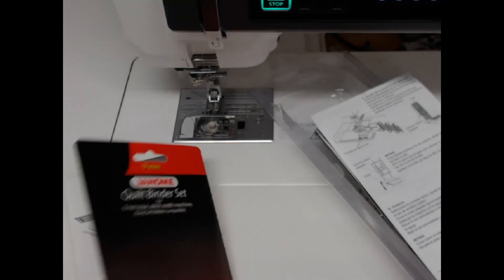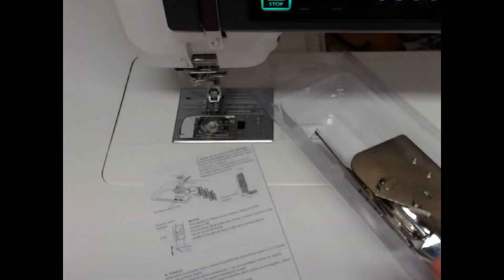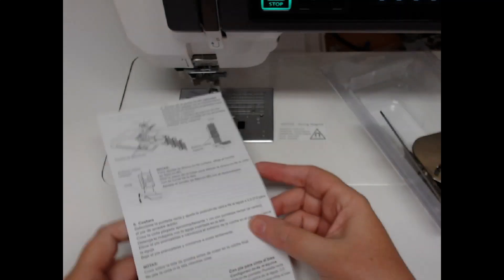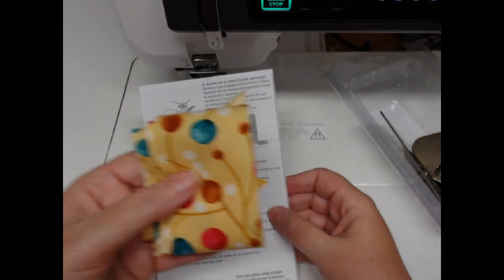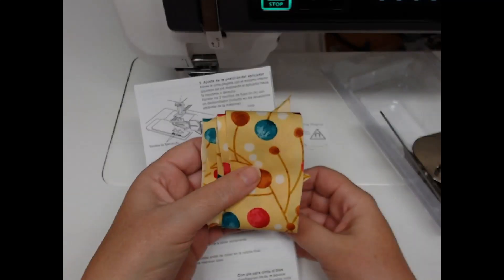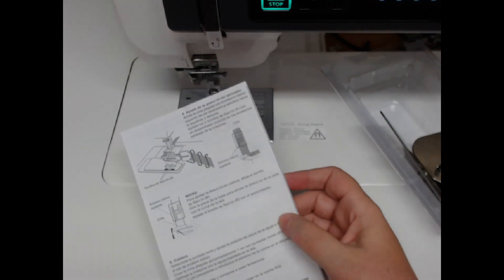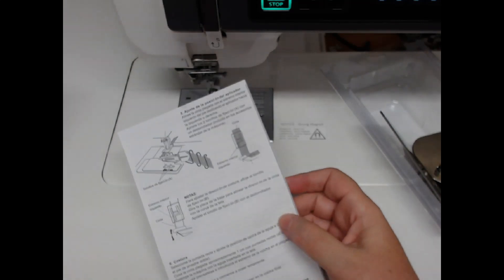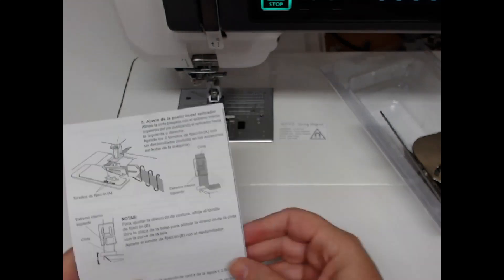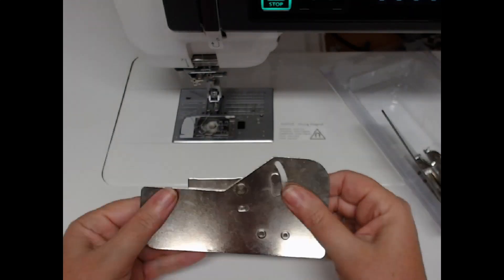And this is used for 2 inch or 5 centimeter tape. So I've already made some tape here and it's going to give me a half inch or 15 millimeter finished binding. Let's see what comes in the box.